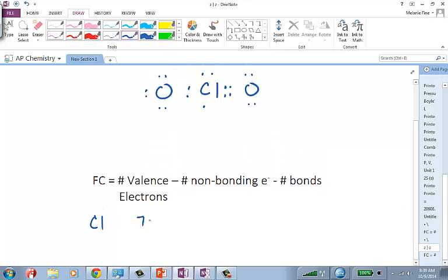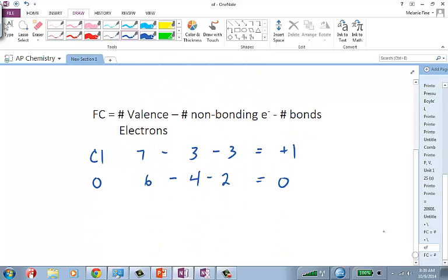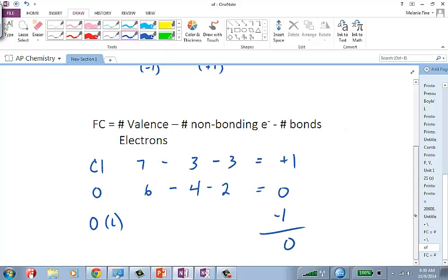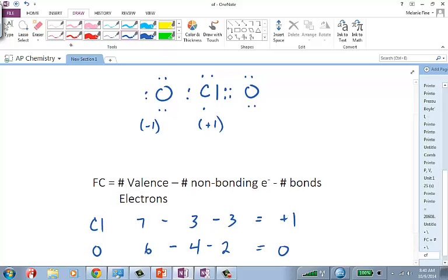What this does to the formal charge is as follows. The central chlorine, of course, has seven valence electrons as usual. It still has three non-bonding electrons, but it now has three bonds. So it has a formal charge of plus one, which is a little bit better than plus two. The oxygen on the left stays the same. That still has a formal charge of negative one. So this is plus one. And the oxygen on the right, six valence electrons minus four non-bonding electrons minus two bonds is going to be zero. So this is looking a little bit better.